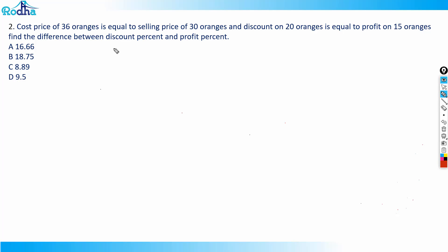This question says that the cost price of 36 oranges is equal to the selling price of 30 oranges, and the discount on 20 oranges is equal to the profit on 15 oranges. Find the difference between the discount percent and profit percentage. Let the cost price of one orange be c, the selling price be s, the discount on one orange be d, and profit on one orange be p.